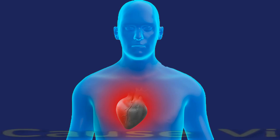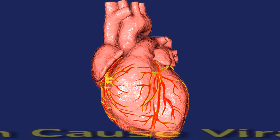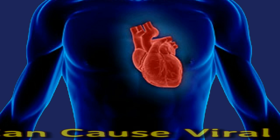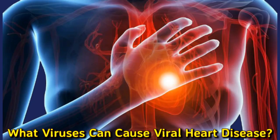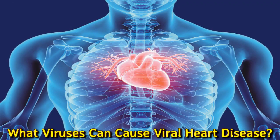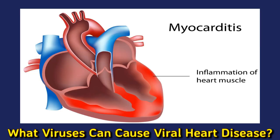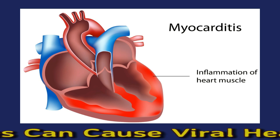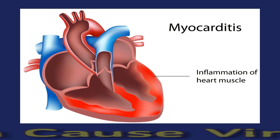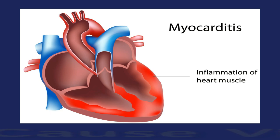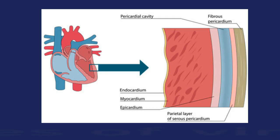People may use the term viral heart disease to describe viral myocarditis. This refers to when a viral infection causes inflammation of heart muscle tissue. Inflammation is the body's natural reaction to an infection or injury to the heart, and typically occurs as part of an immune response to help protect the heart. However, long periods of inflammation can weaken and damage the heart, resulting in heart problems. Viral infections are a common cause of myocarditis, also referred to as viral heart disease.